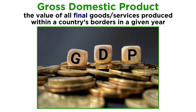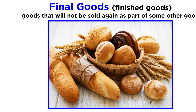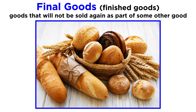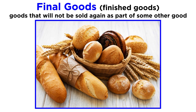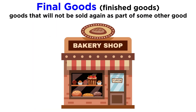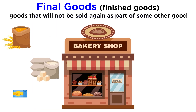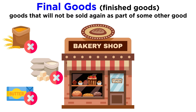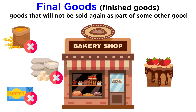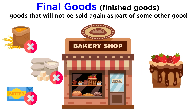Note the emphasis on 'final' and 'in a given year.' Final goods are also called finished goods. A final good is one that will not be sold again as part of some other good. If a baker buys flour, sugar, and butter, we don't count those as final goods, because the baker will use those goods to make a cake. In other words, they are goods that aren't finished yet — they are intermediate goods.